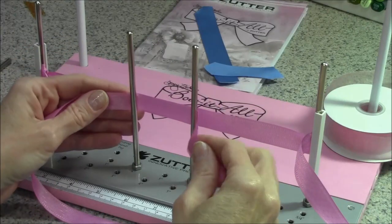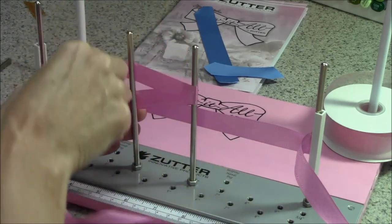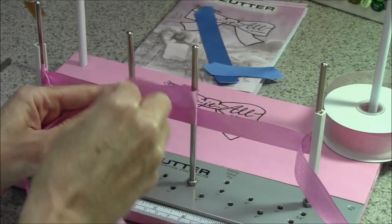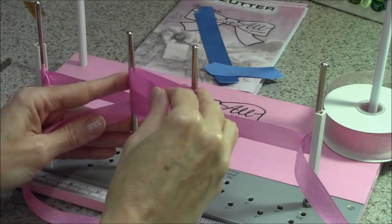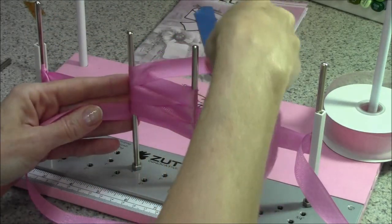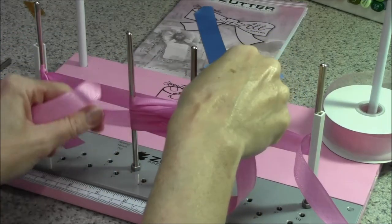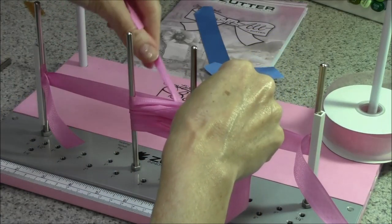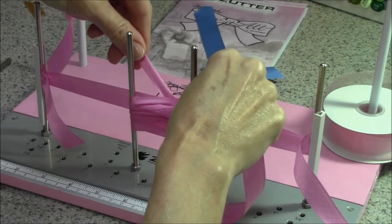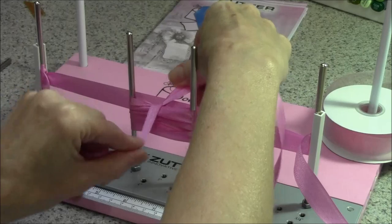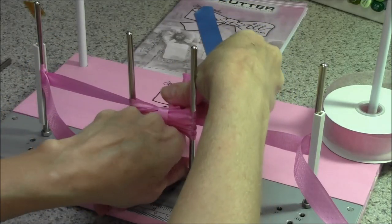And this time we're going to make a triple loop bow. So we're starting out the same way. And we're going to figure eight and we're going to do three loops on each side. When you've got your three loops on each side, you're going to come through the center. You can actually squeeze it together to make it easier. The ribbon in my left hand is what's going to be the center of the ribbon. So I have it folded in half.